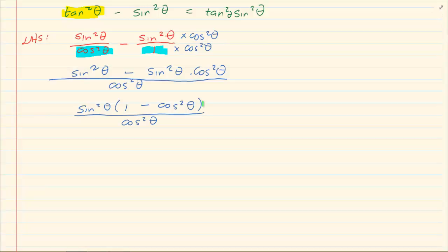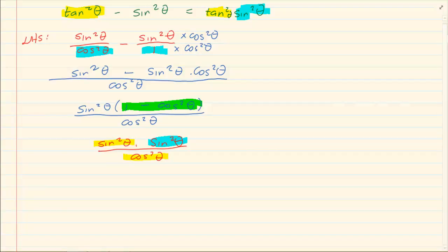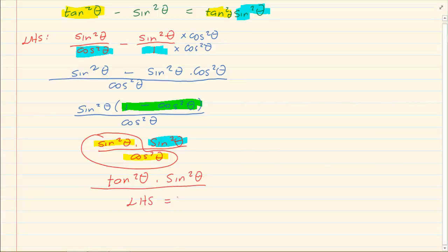Now 1 minus cos squared theta equals sin squared theta, so we have sin squared theta times sin squared theta over cos squared theta. We recognize that sin squared theta over cos squared theta is tan squared theta. So we rewrite this as tan squared theta times sin squared theta. We now have left hand side equal to right hand side.